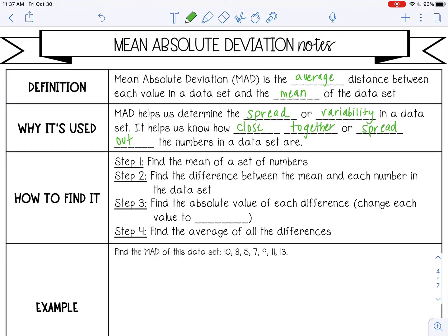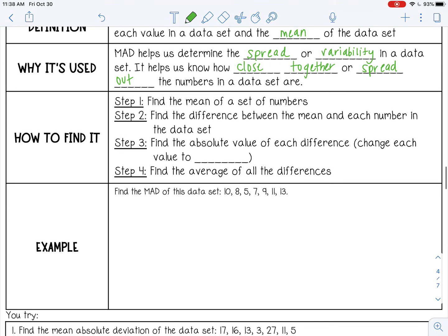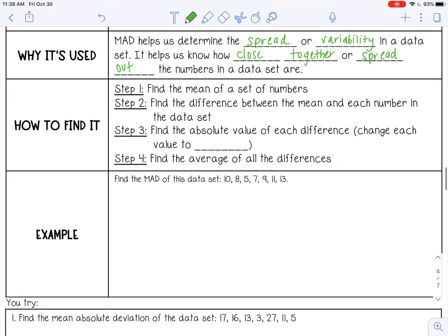Here are the steps to find the mean absolute deviation. First, find the mean of the set of numbers. Then find the difference between the mean and each number in the data set. Then find the absolute value of that difference. Basically, you just want the positive differences because you're finding the distance, how far it is. And then the last step is to find the average of all those differences.